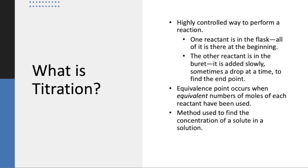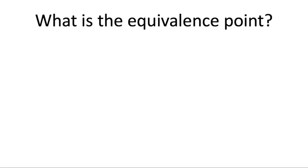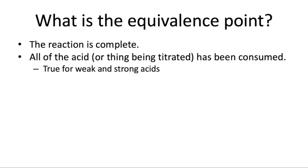And the main point of our titration is to find the concentration of a solute in solution. You're going to be finding the concentration of acetic acid in vinegar. Let's talk a little bit more about what the equivalence point is. This is when the reaction is complete. So all of the acid or whatever it is you're titrating has been consumed. This is true for both weak and strong acids.